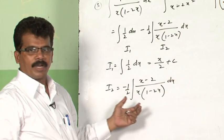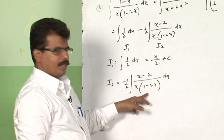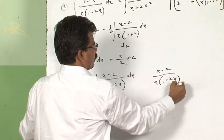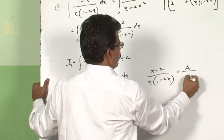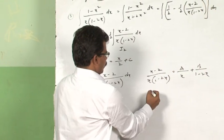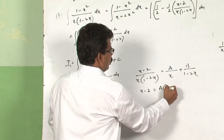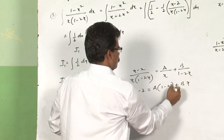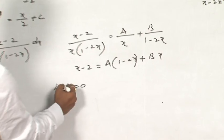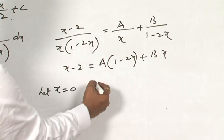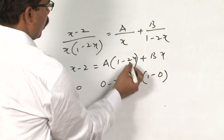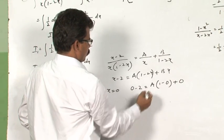For I2: the integrand (x − 2)/(x(1 − 2x)) can be written as A/x plus B/(1 − 2x). To find A and B: write x − 2 = A(1 − 2x) + Bx. Let x = 0 to eliminate B: the LHS gives 0 − 2 = −2, and the RHS gives A(1 − 0) = A. Therefore A = −2.